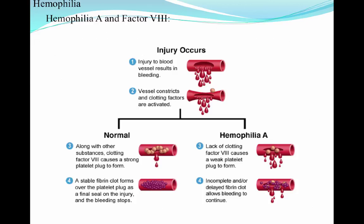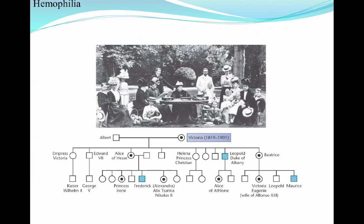Today we have things like gene therapy that can help this process, but in the 1700s and 1800s they didn't even know what this disease was. When it comes to royal bloodlines, Queen Victoria of England was a carrier of the hemophiliac gene on the X chromosome. The carrier is shown as a dark circle in the diagram, and you can see it was actually passed on to her daughter Alice and her daughter Beatrice.